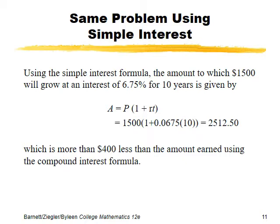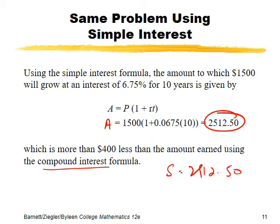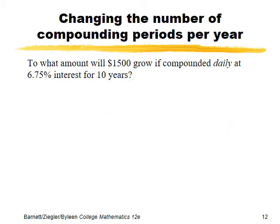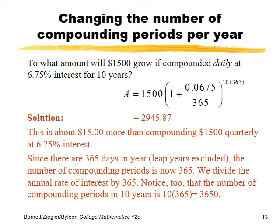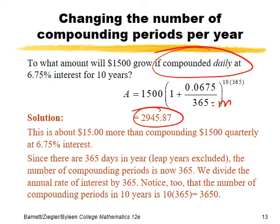Using the simple interest formula for the same problem gives an amount more than $400 less than what compound interest yields — compound interest gave us around $2900. You can see that if we increase the compounding periods — for example, from m=4 quarterly to m=365 daily — the amount increases even more. Compound interest gives more return than simple interest, and furthermore, within compound interest, increasing the compounding period gives even more interest.